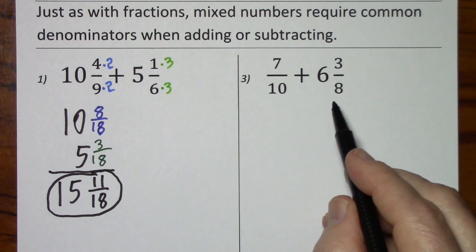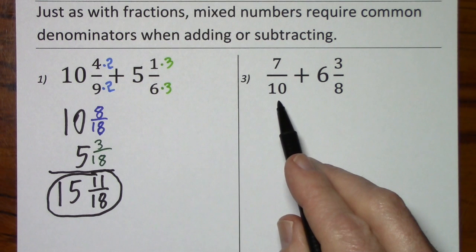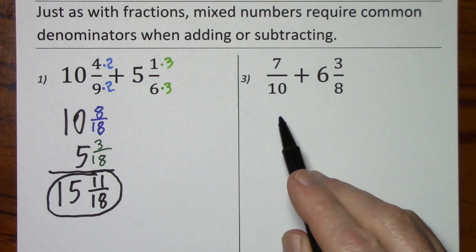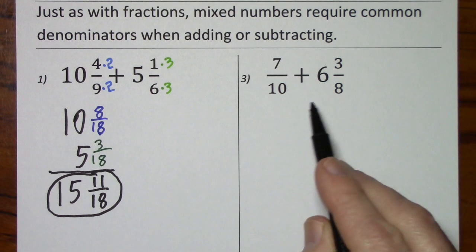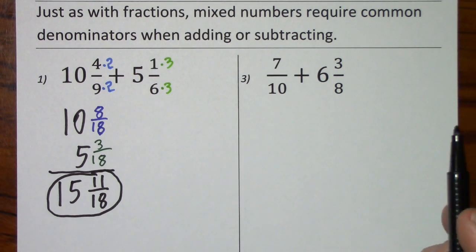Looking at the next problem, we'll need common denominators. Look at multiples of the biggest, 10, then 20. 8 won't go into 20, 30 still won't work, 40. 8 goes into 40. So, 40 is our least common denominator.